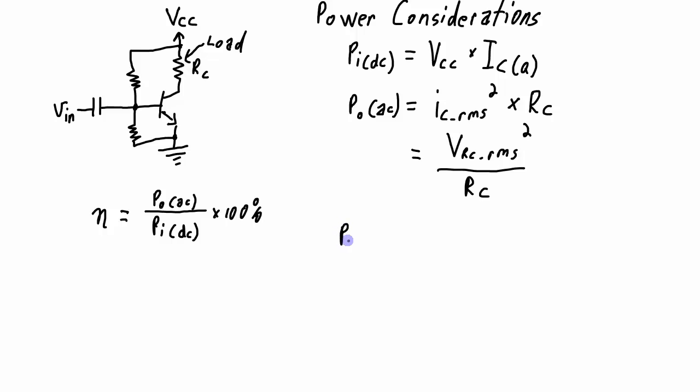So I'm going to have the maximum input power when I have ICQ at the saturation current over 2. So half the saturation current. And I can expand this out. And ICSat can also be written as VCC over RC. And this is all divided by 2. Multiplying these terms out, I get VCC squared over 2 RC. So that expression is going to be my input power when I have the highest efficiency.